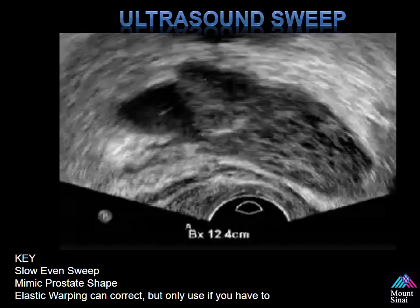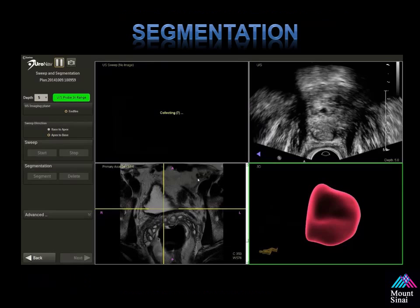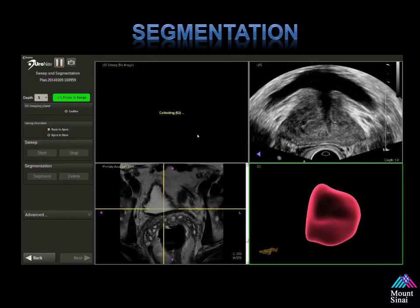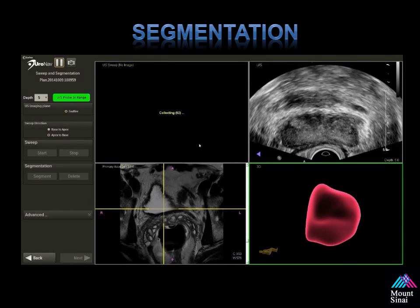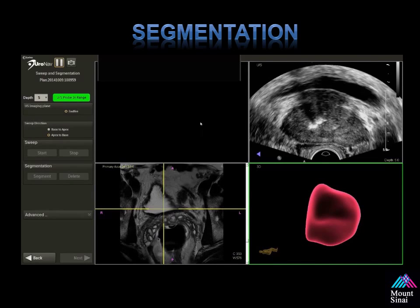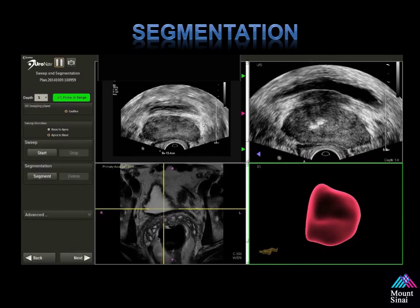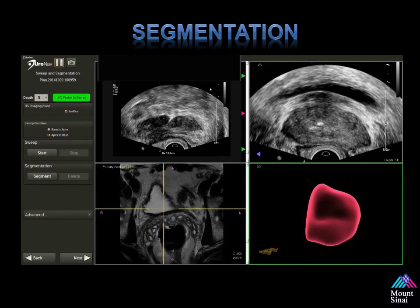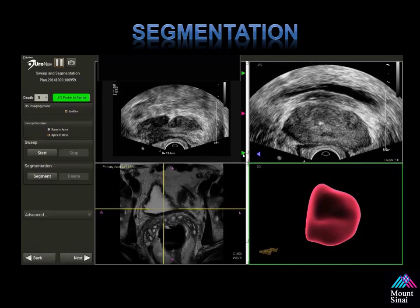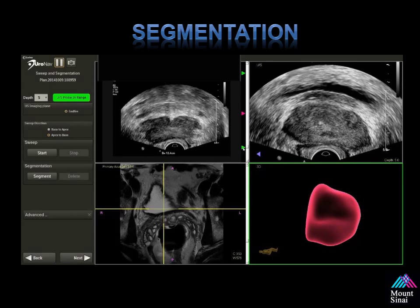Again, it's a slow, even sweep. Once the sweep has been performed, the data set is collected and then the computer is able to surface render or segment it. Reviewing the images in the upper left-hand corner, we set the apical slice, we set the slice of the base, and place the orange arrow in the middle of the prostate. This creates our axis.